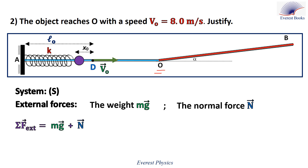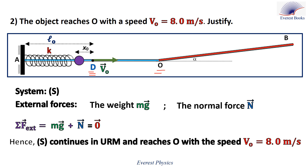Therefore the net force equals zero, and we apply Newton's first law. According to Newton's first law, if the object is initially in motion and the net force is zero, it continues in uniform rectilinear motion. Since the object was in motion at point D and the net force between D and O is zero, it continues at constant velocity and reaches point O with a speed of 8 meters per second.